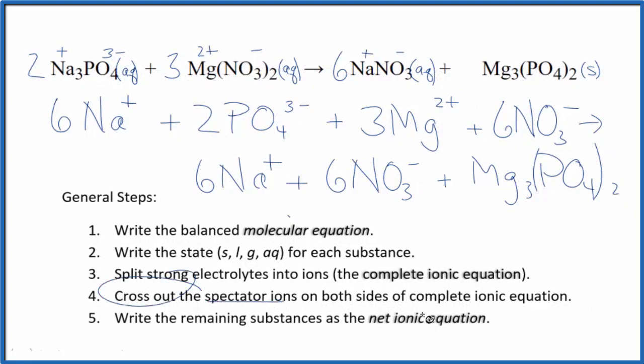Now we can cross out spectator ions. They're on both sides of the complete ionic equation. We have 6 sodium ions here in the reactants, 6 in the products, we cross those out.